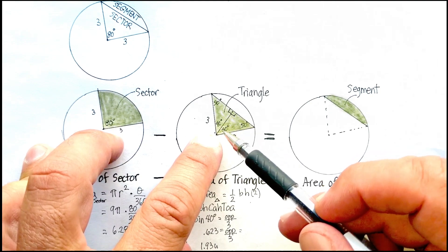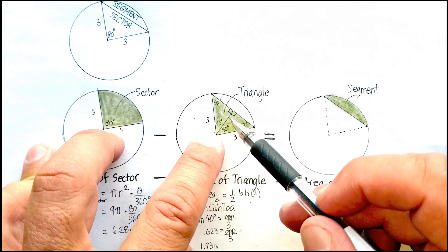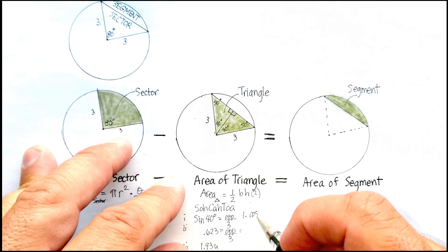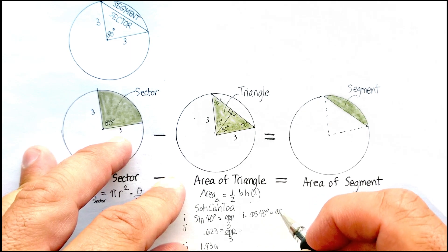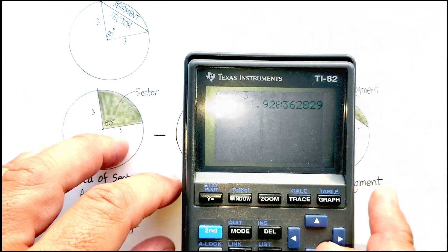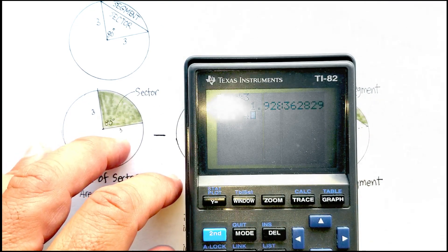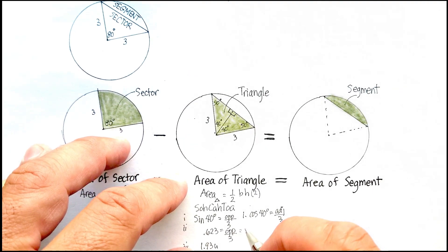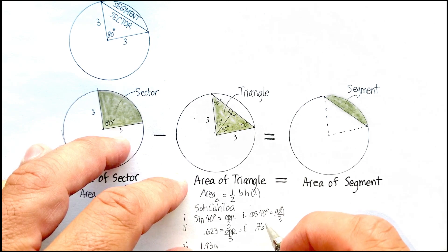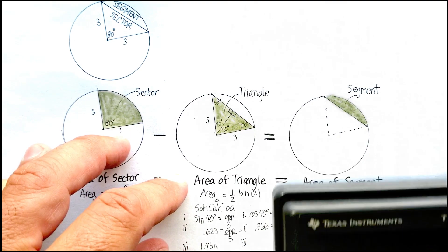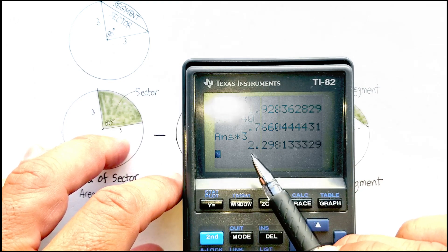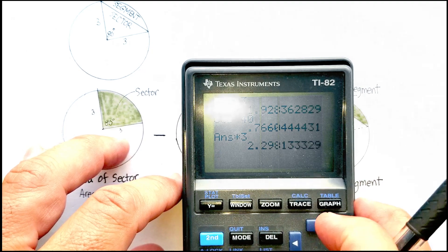Now, I need to find this side here. And again, if I use 40 degrees, it's going to be adjacent side over the hypotenuse, and that would be cosine. So, I'm going to say the cosine, 40 degrees, adjacent over the hypotenuse. Let's find the cosine, 40 degrees. That's going to give me 0.766, multiply both sides by 3. 2.298, which is 2.30. 2.30 units.